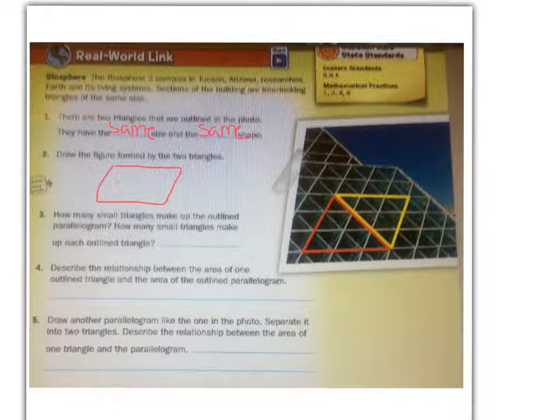How many small triangles make up each outlined triangle? Well, one, two, three, four, five, six, seven, eight, nine. There are nine in each of the small outlined triangles.